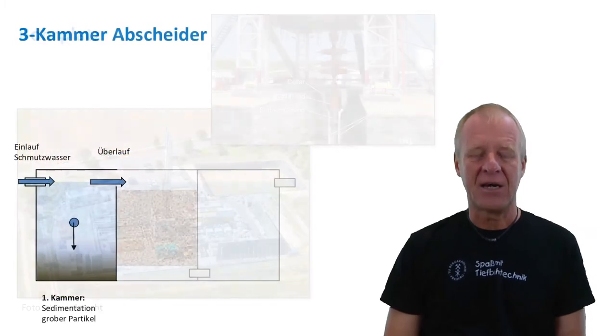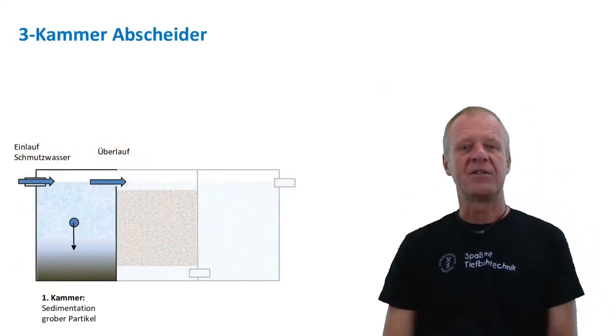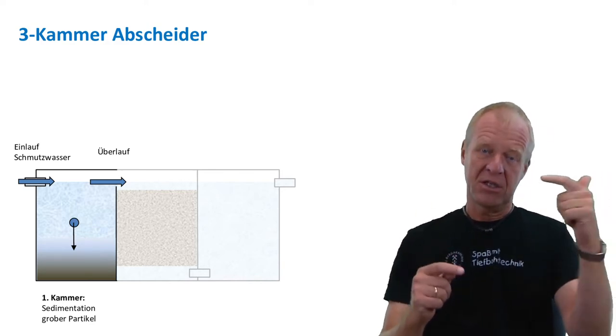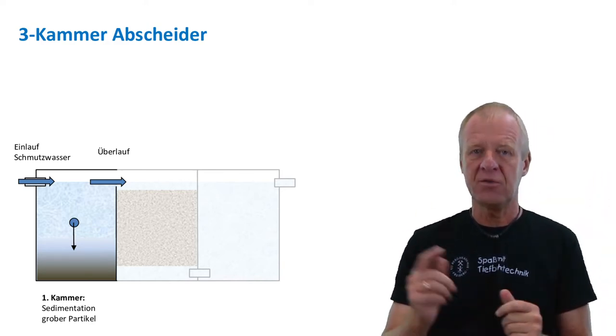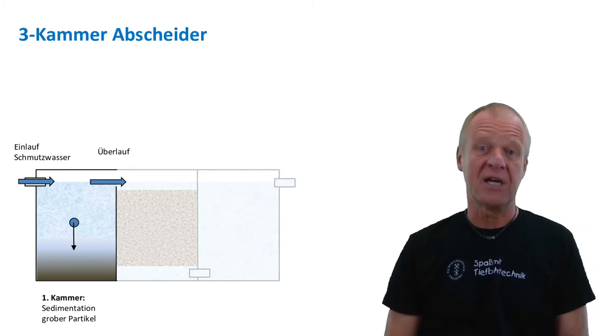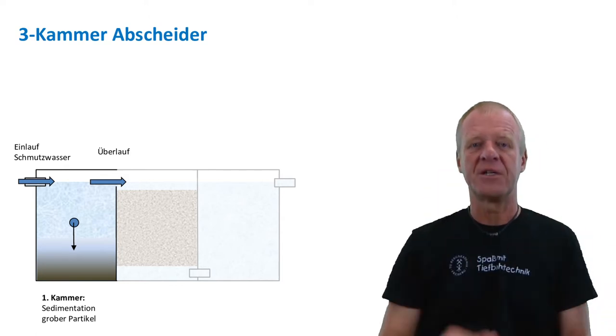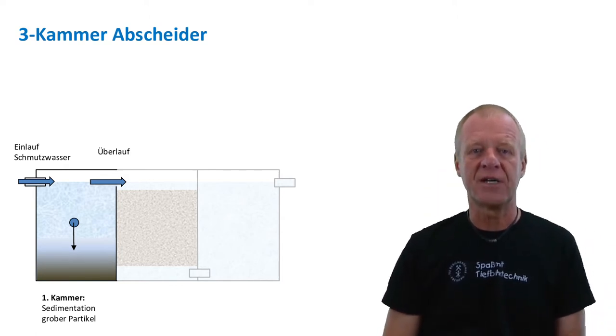Behind me, we can see a sketch of the so-called three-chamber separator. In the first chamber, the liquid goes in from one side at the top and leaves at the top of the other side. The chamber is large enough to allow heavy and big solids like sand and stones to sink downwards and settle on the ground gradually.